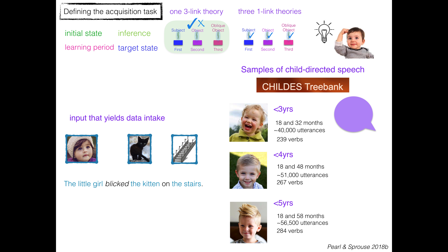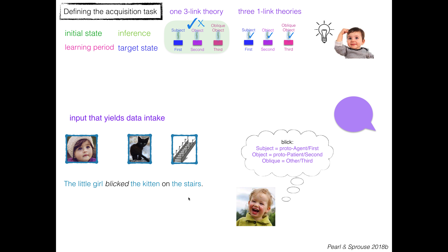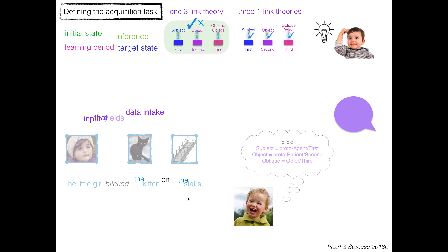Our input is going to come from the child's treebank, where we have samples of child-directed speech from three, four, and five year olds. We get examples like 'the little girl blicked the kitten on the stairs,' and the kind of information we're extracting is where those intermediate representations are appearing — what's in the subject, what's in the object, what's in the oblique object, which thematic representation corresponds. That's what you're learning from.